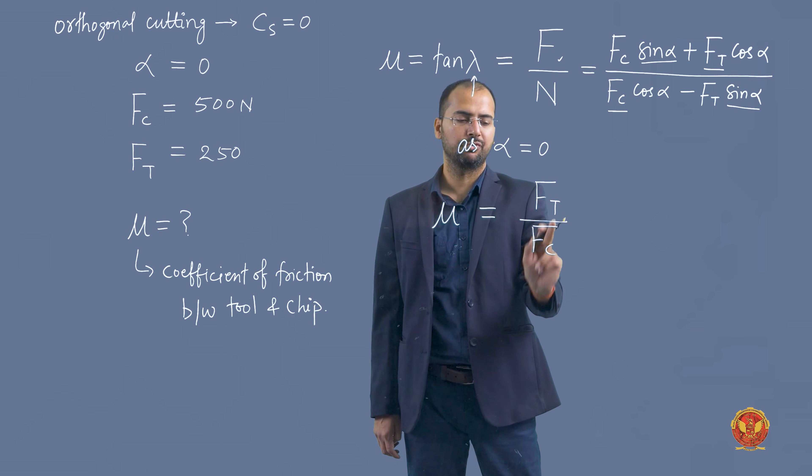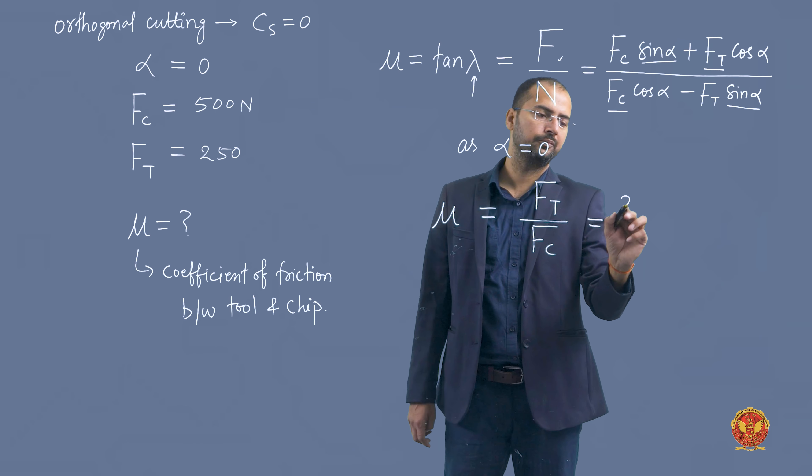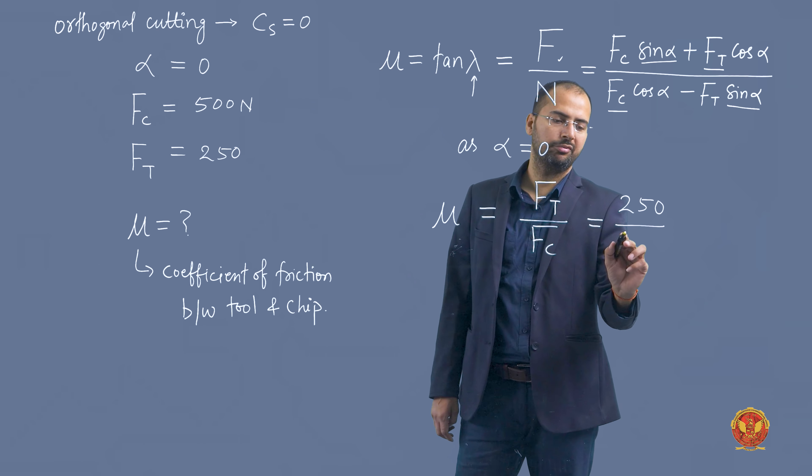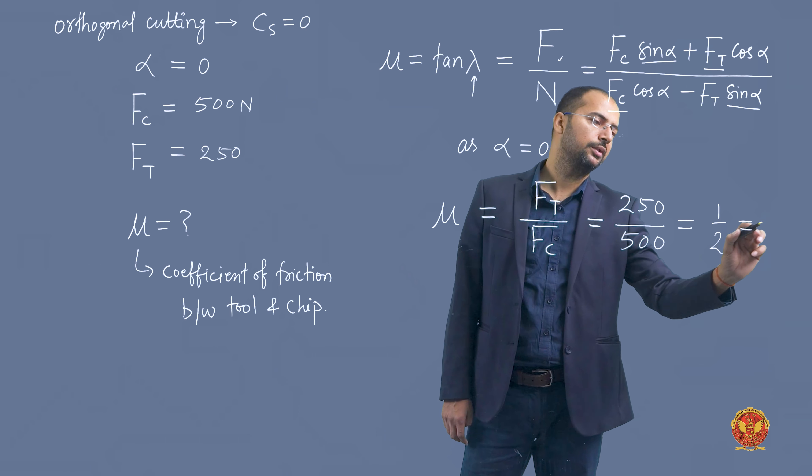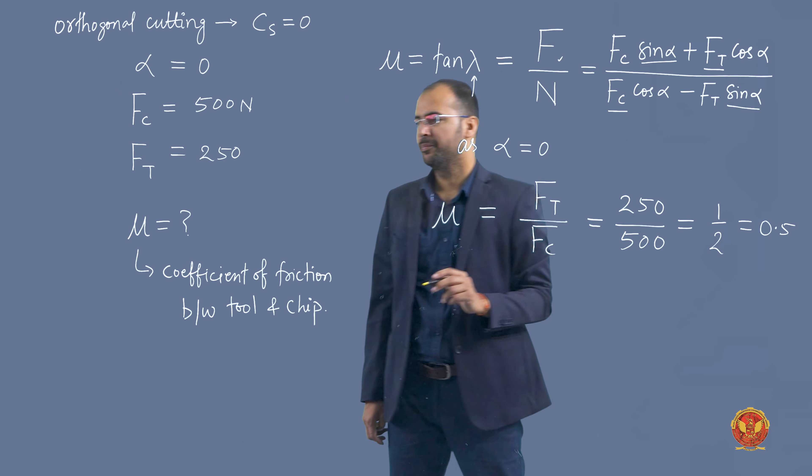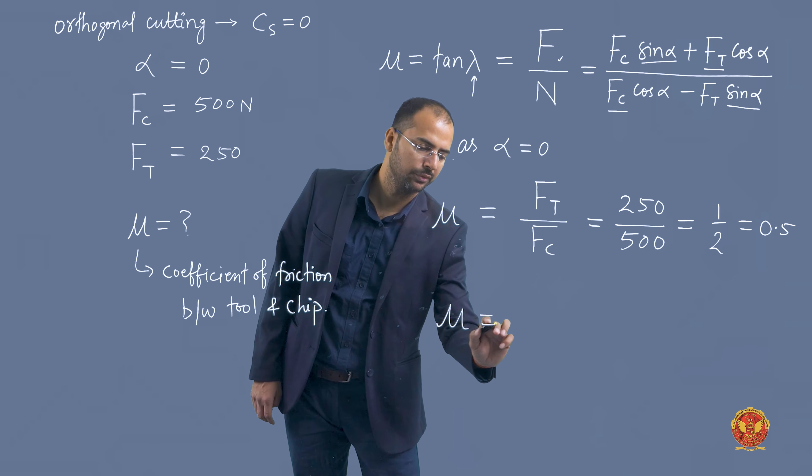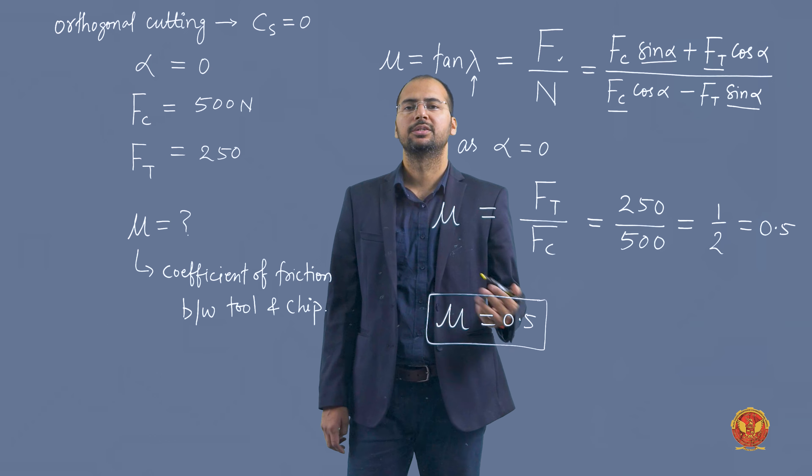Ft is our thrust force and Fc is our cutting force. Thrust force value is given as 250, and cutting force value is given as 500. Solving this, we get one by two, that means 0.5. So the coefficient of friction value comes out to be mu equals 0.5.